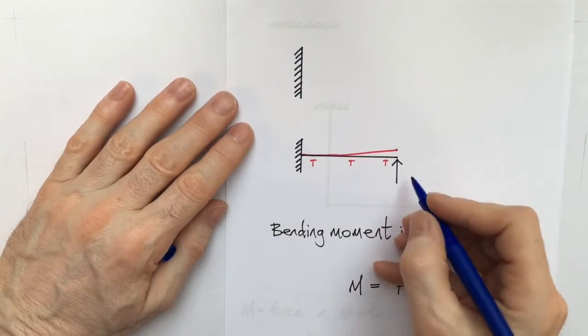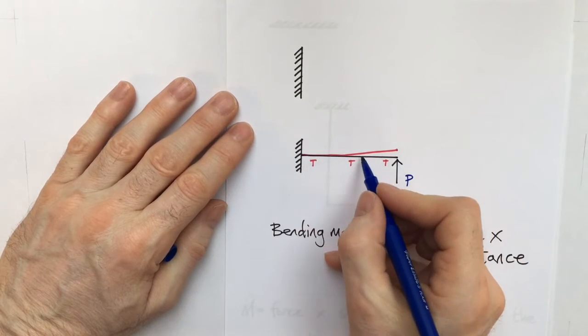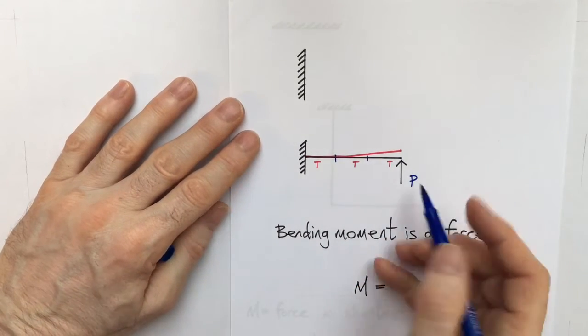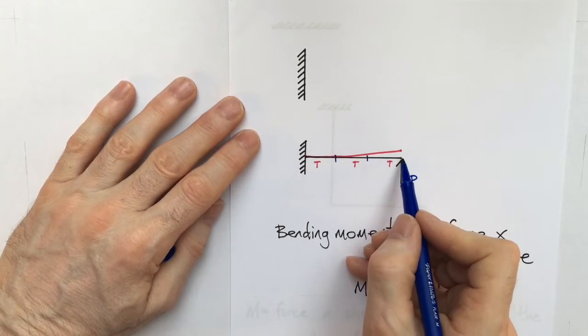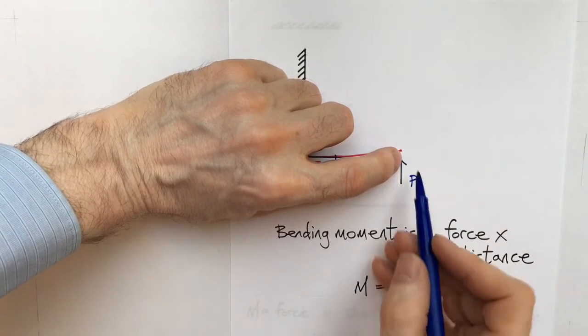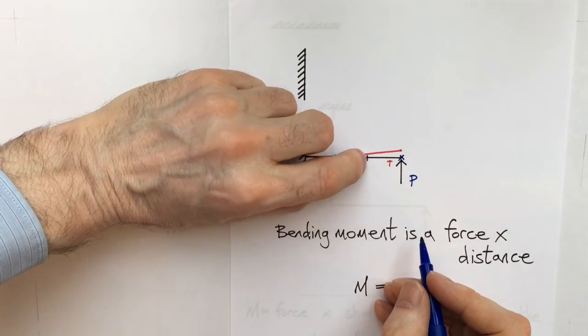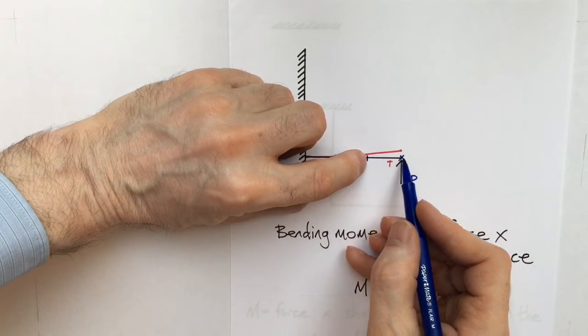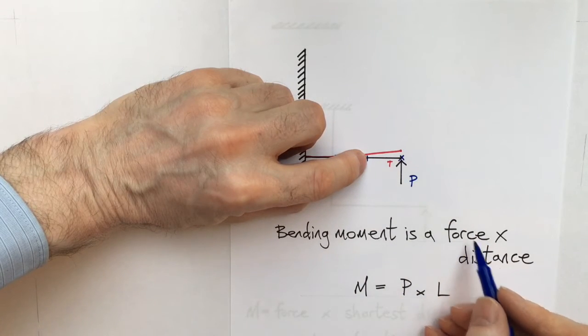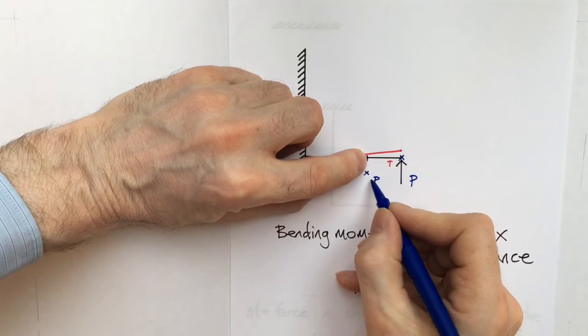Let's just say that we had a force P here and we split this length into three equal parts. We'll say it's just one meter each apart. It really doesn't matter. At the very end, the distance, the force times the distance, the distance to the force is zero. So the bending moment is going to be zero. One meter away, the distance to the force is one meter. So the bending moment is going to be force P times one. So it's going to be P. One P.